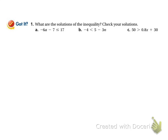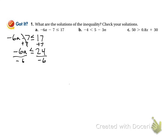Three problems here. I've got negative 6a minus 7 is less than or equal to 17. I want to get a alone, so I need to get rid of that negative 6 and that minus 7. First thing I'm going to do is get rid of the 7, so I'm going to add 7 — these cancel out — and I'm just left with negative 6a less than or equal to 24. Then I'll divide by negative 6. When I divide by a negative number, I need to flip the sign and I get a is greater than or equal to negative 4.